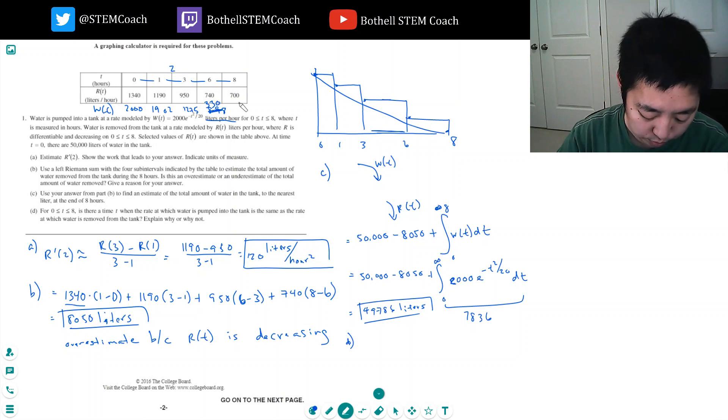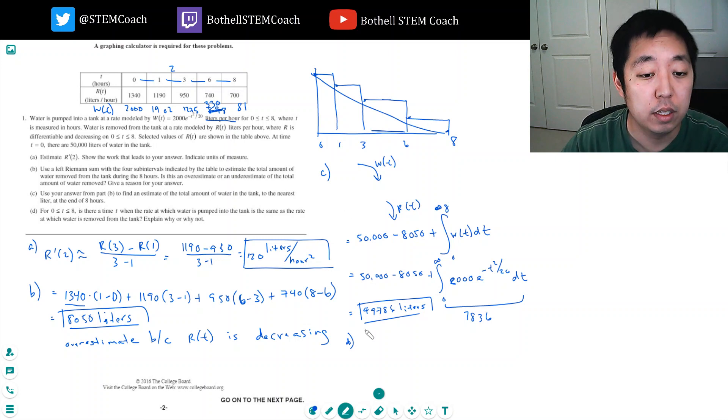w(6) is about 330, and w(8) is about 81. So what happens is w(t) is larger than r(t) at the beginning, but it passes through and goes below r(t). So yes.